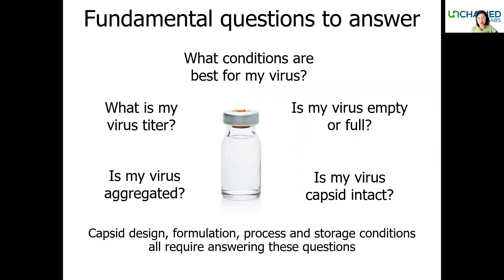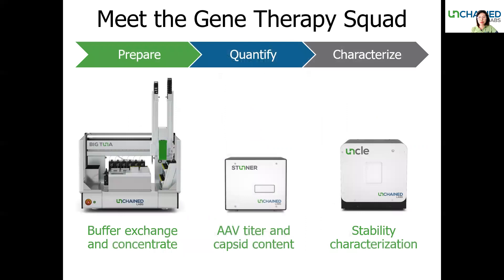Since AAV therapy breakthroughs are fairly recent, the development processes are still under exploration. Important characterization questions such as AAV titer, full/empty ratios, and capsid stability still need to be answered because they all directly impact the capsid design, formulation, and storage conditions. But getting to these answers takes a lot of time and precious AAV samples. I'm going to take you through the three innovative tools that we have at Unchain Labs to help automate and accelerate the whole AAV characterization process.